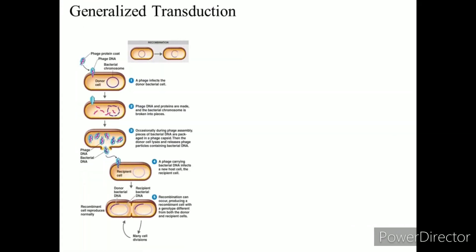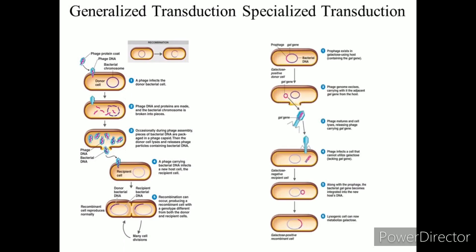Two types of transduction: Generalized transduction — the bacteriophage can pick up any portion of the host genome. The bacteriophage first infects the donor cell and then begins the lytic cycle. Specialized transduction — the bacteriophage picks up only specific portions of the host's DNA. The bacteriophage enters the lysogenic cycle, integrates its genome with the host cell's DNA at certain locations, remains dormant, and passes from generation to generation into daughter cells during cell division.